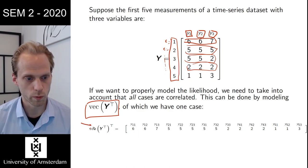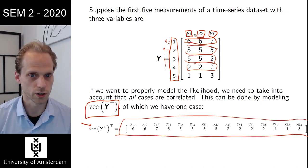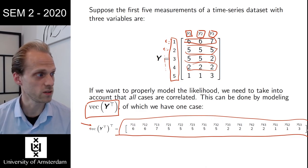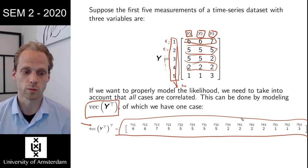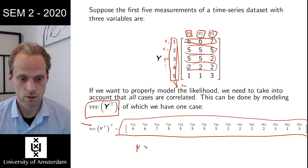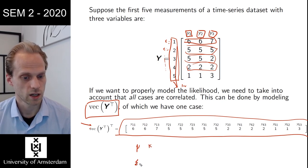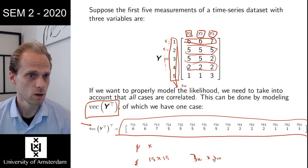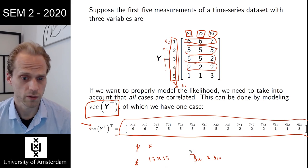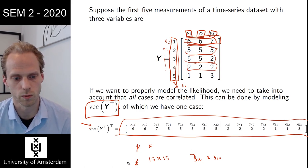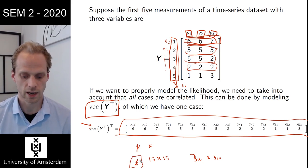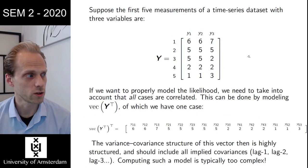What we would have to do then is take into account that these scores are not independent from these, and they're not independent from these. So there are correlations that we need to model. The way that can be done is by modeling the entire dataset as a single vector. So we vectorize the entire dataset, and then treating that as one observation, like one case. So then what you would do is you would vectorize this whole dataset. We get one huge vector of data, which suddenly not three variables, but 15 variables. We can model that with the mean vector, which is of size 15, and a covariance matrix, which is of size 15 times 15.